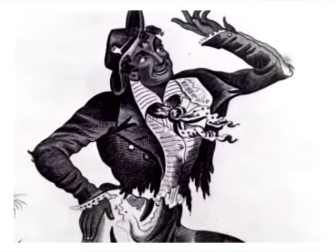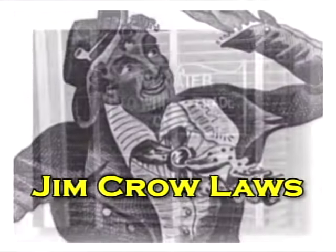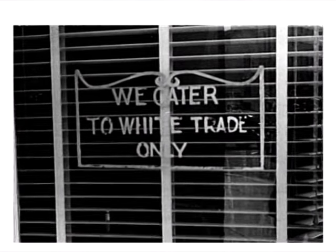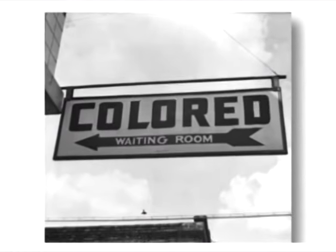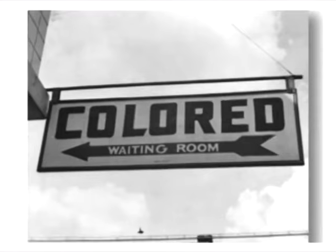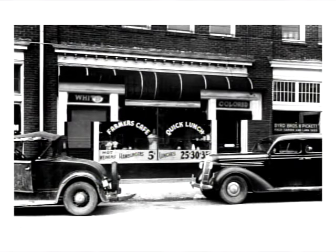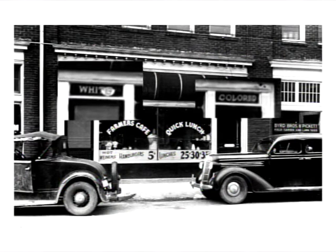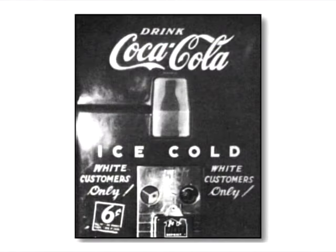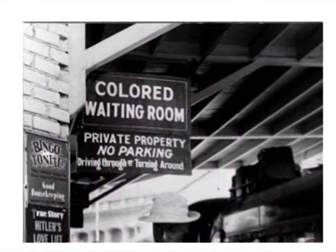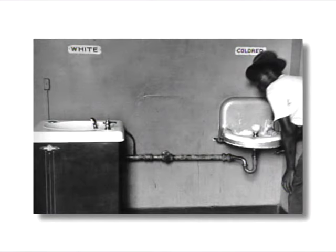This prevailing prejudice against blacks led to the creation of local regulations in the South known as Jim Crow laws. These laws, usually designed to skirt federal civil rights laws, created increased segregation of blacks from whites. Jim Crow laws kept blacks from using the same train station waiting rooms as whites, riding in the same railroad cars as whites, eating in the same restaurants as whites, or even using the same washrooms and drinking fountains as whites.